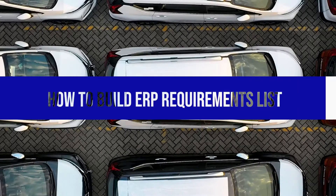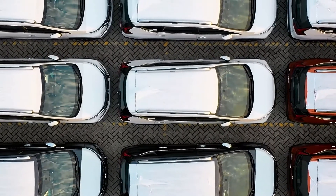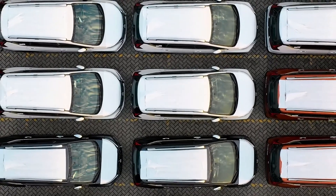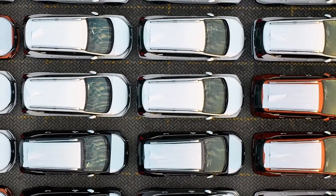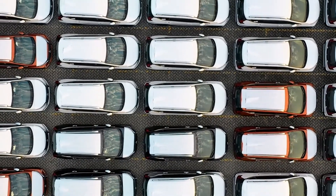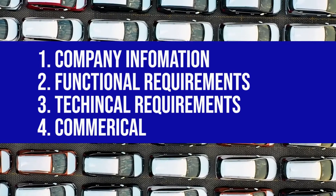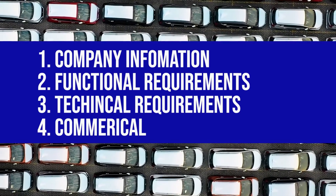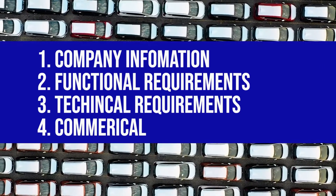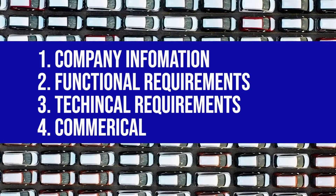How to build an ERP requirements list? The first step in the process is to build a document that will house your requirements. Typically this is done on an Excel spreadsheet and different sheets are used for each element of the supplier's response. We would suggest creating a sheet for your supplier responses covering at minimum: one, company information; two, functional requirements; three, technical requirements; and four, commercials.